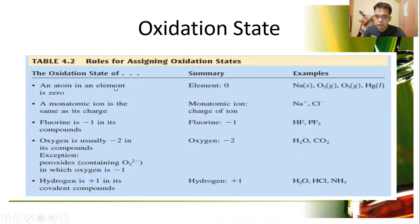These are the common oxidation states for the elements. An atomic element is zero. The monoatomic ion is the same as its charge. For example, the charge of this sodium chloride ion here is positive one, and for the chloride it's negative one. Then for sodium, an elemental ion is zero. Fluorine is negative one in its compounds.